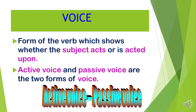In English grammar, verbs have five properties: voice, mood, tense, person and number. Here we are concerned with voice. Voice is a form of the verb which shows whether the subject acts or is acted upon.